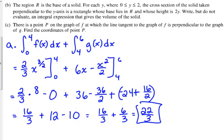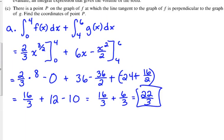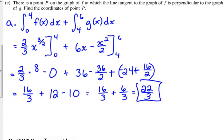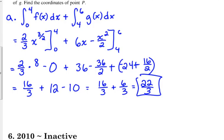Part B says region R is the base of a solid. For each Y, where Y is between 0 and 2, the cross section of the solid taken perpendicular to the Y axis is a rectangle whose base lies in R, whose height is 2Y. Write but do not evaluate an integral expression that gives the volume of the solid. This one is in terms of Y.